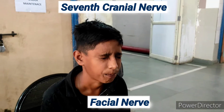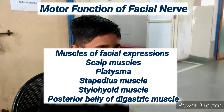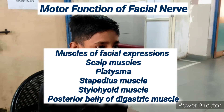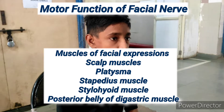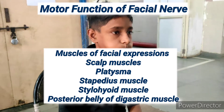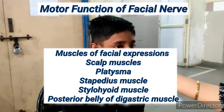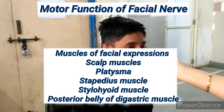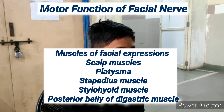The facial nerve is a mixed cranial nerve, mainly with motor function. The motor function of the facial nerve is that it supplies all the facial muscles for facial expression except levator palpebrae superioris. It also supplies the scalp muscle, platysma, stapedius muscle, stylohyoid, and posterior belly of the digastric muscle.